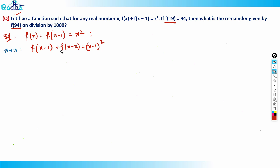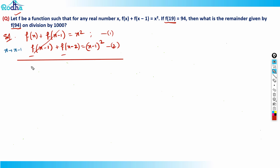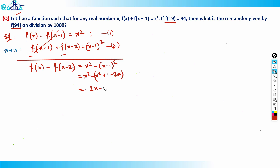Now I can get a negative sign and a gap of two. Call the original Equation 1 and the new one Equation 2, then subtract. The f(x-1) terms cancel, giving f(x) - f(x-2) = x² - (x-1)². Expanding: x² minus (x² - 2x + 1) = 2x - 1. So f(x) - f(x-2) = 2x - 1.